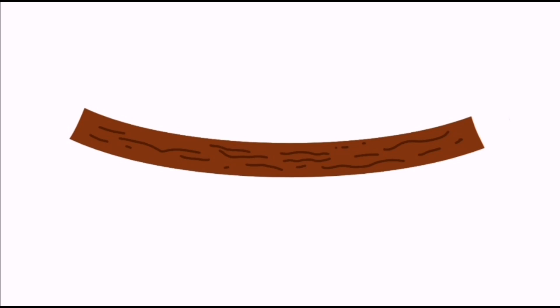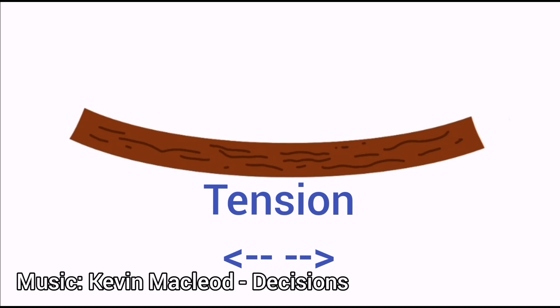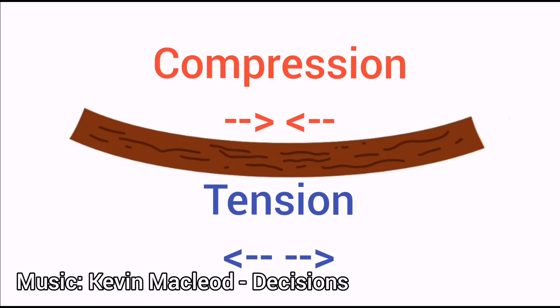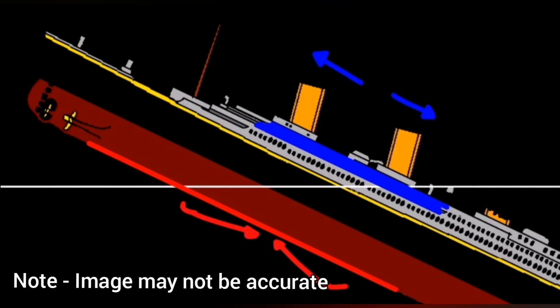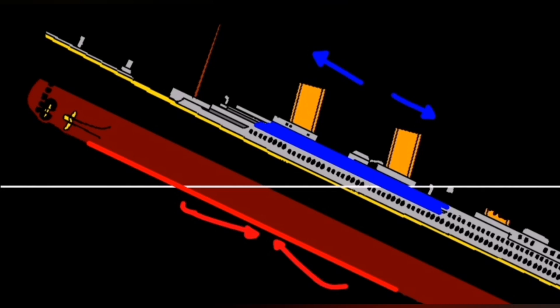Have you ever tried bending a stick to break it in half? When the stick starts going into a curve, it starts to experience forces called tension and compression. Tension is a force that stretches or breaks material apart, while compression is a force that crushes everything together. This also occurs on the Titanic when it reaches 15 degrees but no higher than 23 degrees, when the compression force starts building up the keel while the upper decks are slowly crushed due to tension forces.